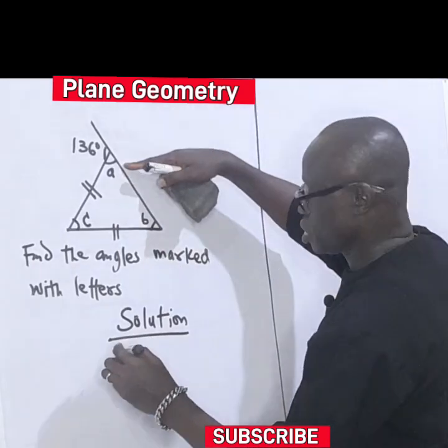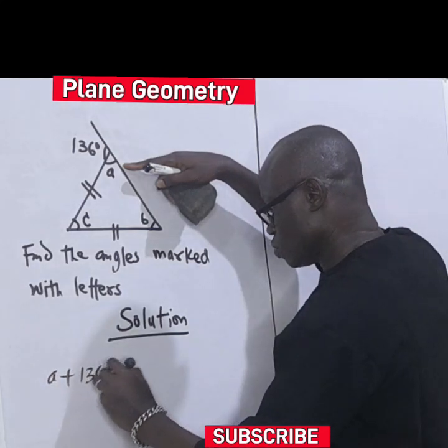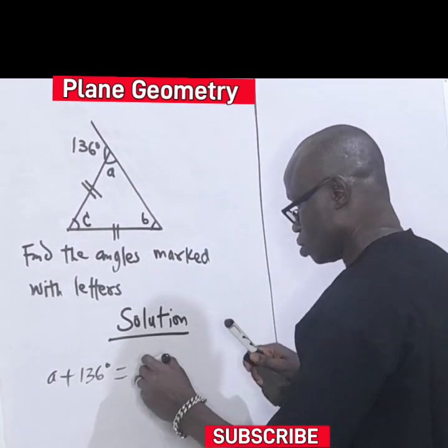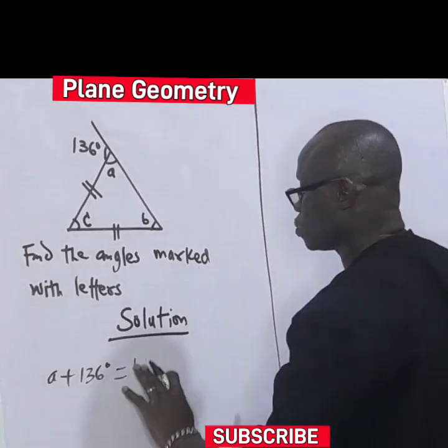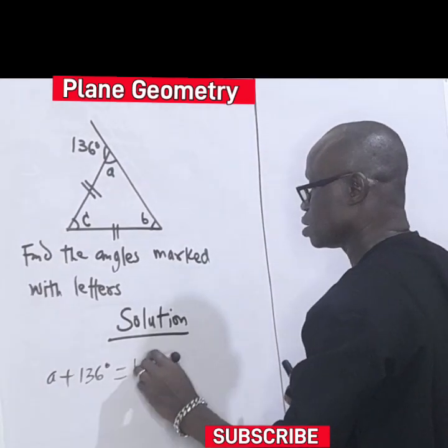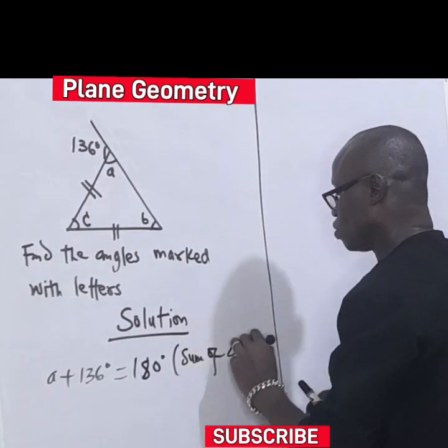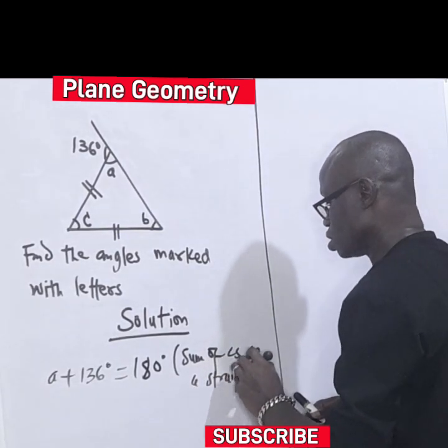Now, let's start from here. This will give us A plus 136 degrees equal to 180 degrees, using the sum of angles on a straight line.